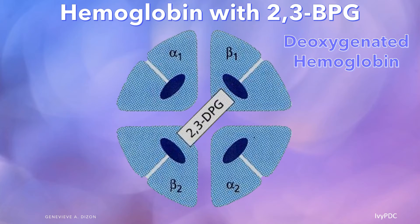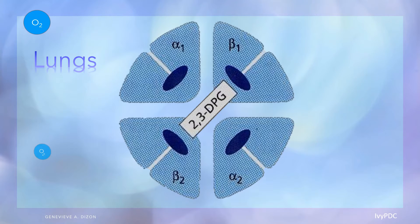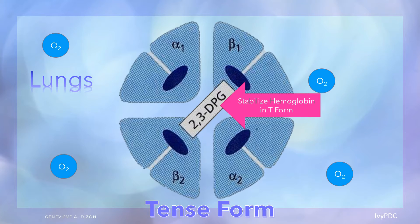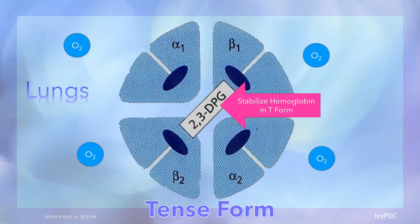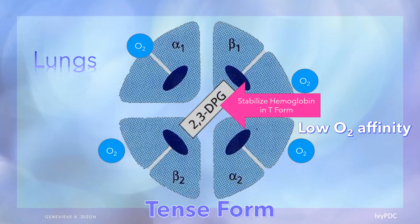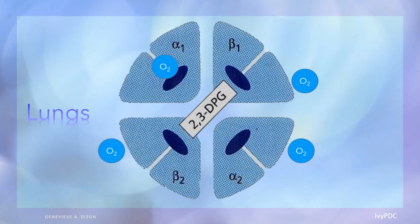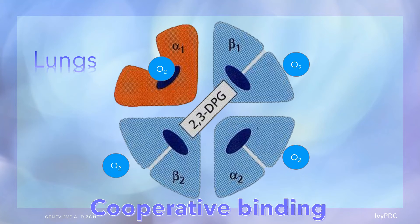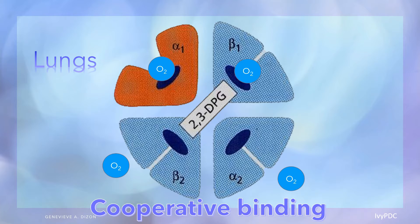Let's summarize what we have learned so far. A deoxygenated hemoglobin with 2,3-BPG travels to the lungs where there is a high partial pressure of oxygen. This is the tense form — a stabilized hemoglobin because of the 2,3-BPG — and it has low oxygen affinity. Since there is a high concentration of oxygen, oxygen starts to bind to one hemoglobin, causing a conformational change on the globin structure. This signals the cooperative binding of the heme portions of the hemoglobin.